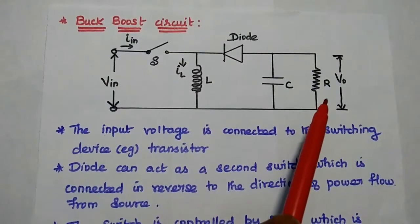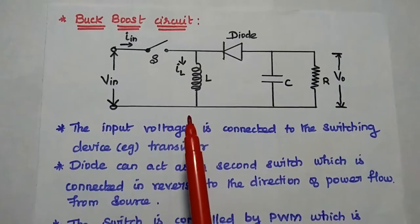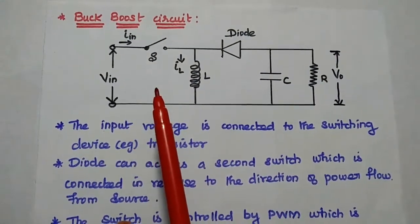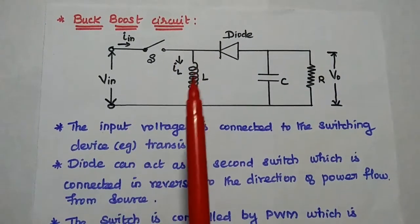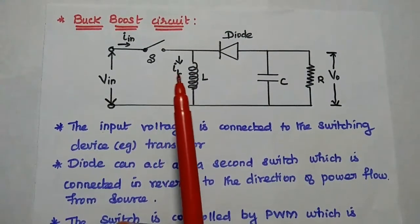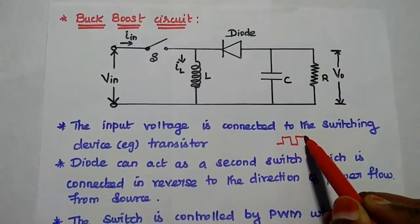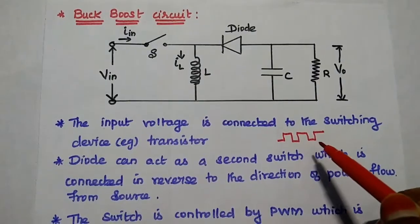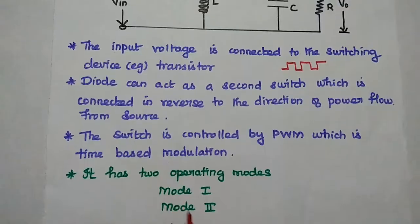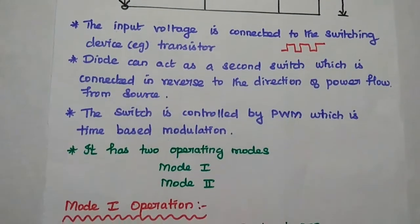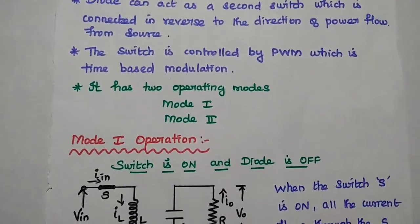The load resistor is the component across which we get the actual output. The input is connected to the switching device, and here the switching device is controlled by pulse width modulation. As we know, pulse width modulation has a duty cycle, and based on this duty cycle the switch is controlled. The switch is controlled by the pulse width modulation which is time-based — that is the duty cycle.